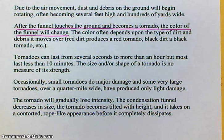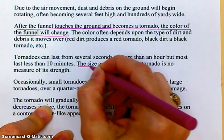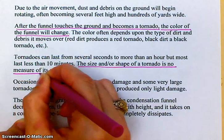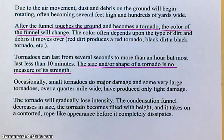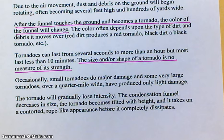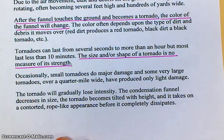Tornadoes can last from several seconds to more than an hour, but most last less than 10 minutes. The size and shape of a tornado is no measure of its strength — small tornadoes can do major damage, and some very large tornadoes over a quarter mile wide have produced only light damage. As the tornado loses intensity, the condensation funnel decreases in size, the tornado becomes tilted with height, and it takes on a contorted, rope-like appearance before it completely dissipates.